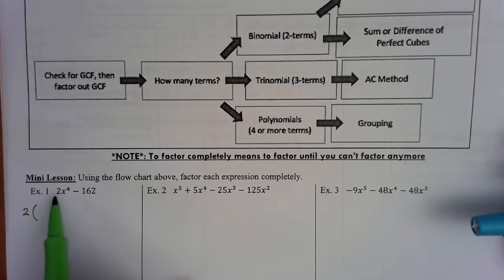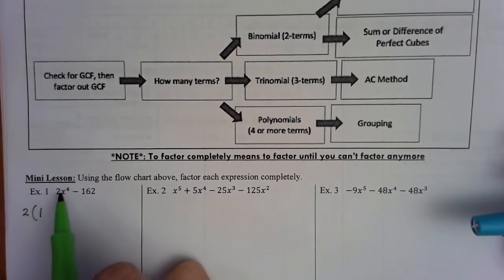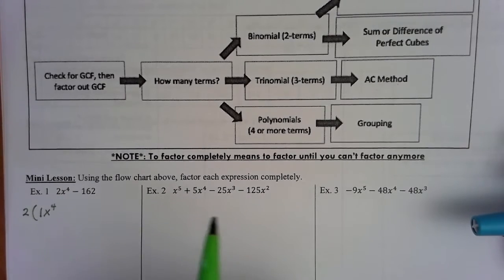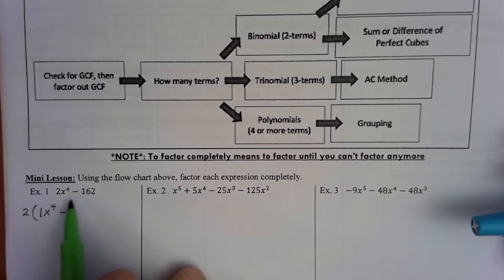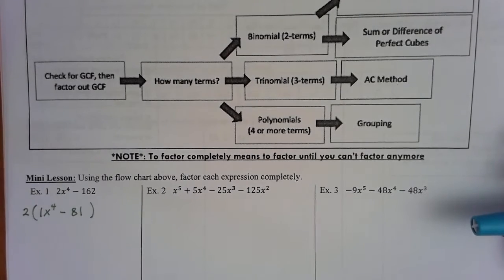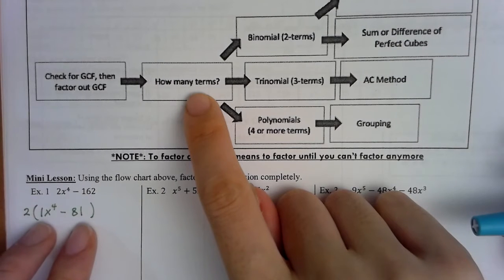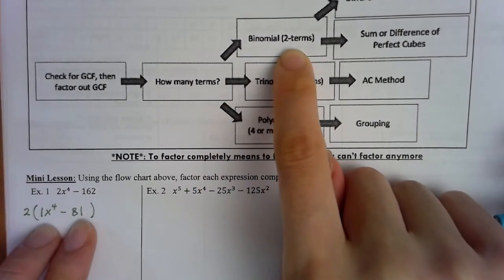I'm going to take out 2 from each term by dividing. 2 divided by 2 is 1, so I have 1 times x to the fourth. Then negative 162 divided by 2 is 81. Now we ask: how many terms are left inside the parentheses after taking out the GCF? I see two terms, so I have a binomial.